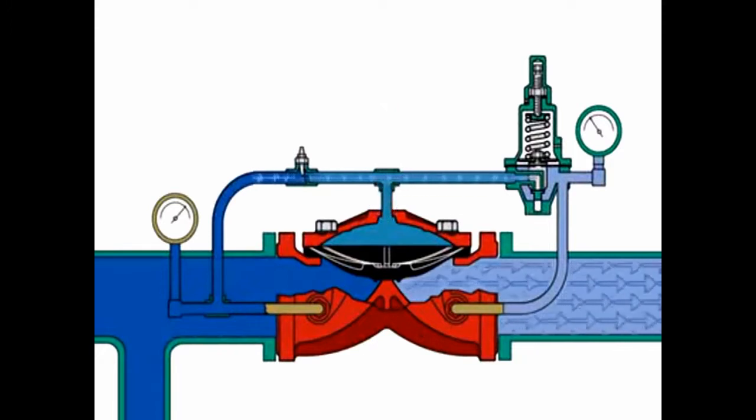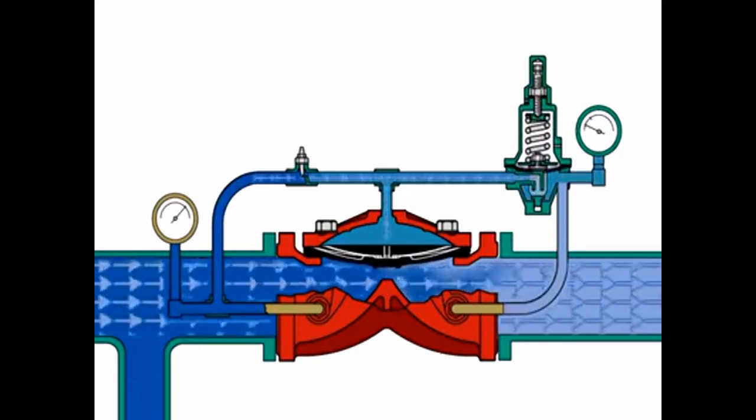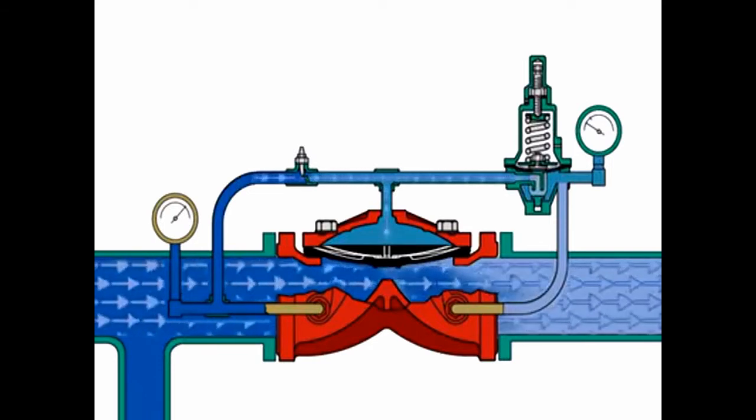When there is a flow demand downstream, outlet pressure drops below the set pressure. The pilot valve seat opens to relieve pressure from the diaphragm chamber, allowing the PRV1 diaphragm to lift, opening the valve.